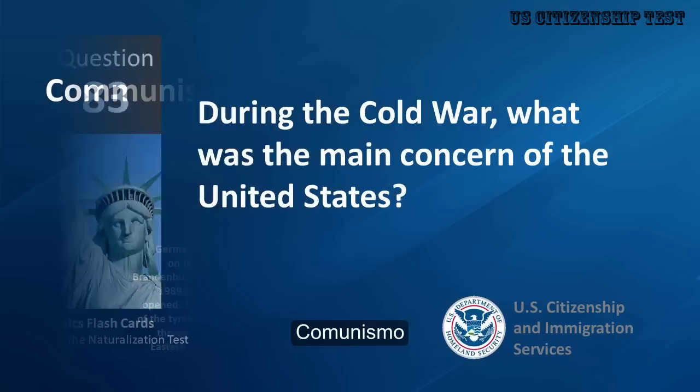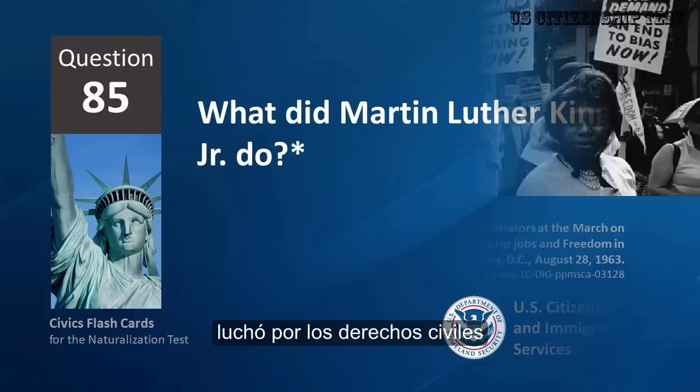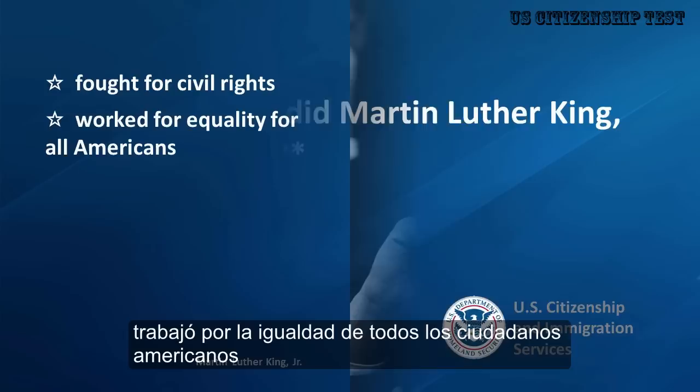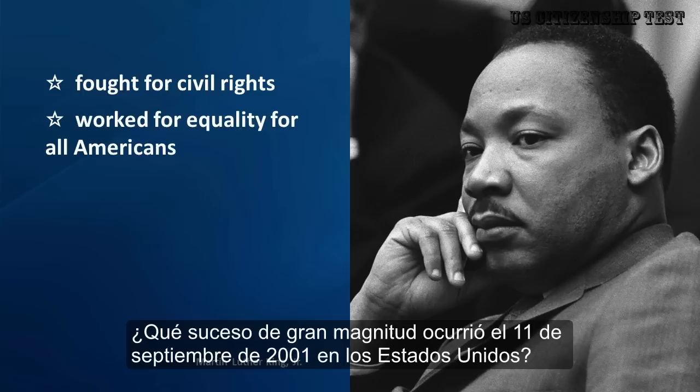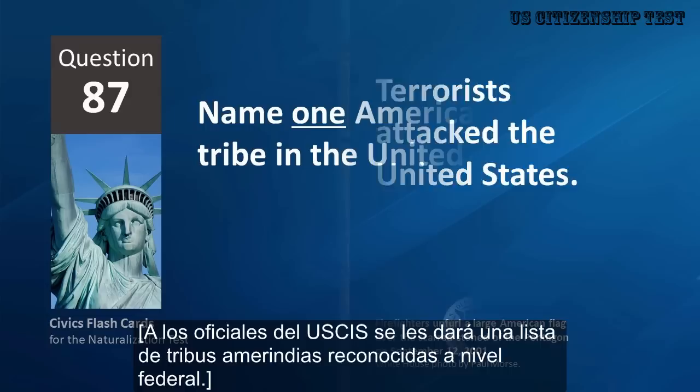During the Cold War, what was the main concern of the United States? Communism. What movement tried to end racial discrimination? Civil Rights Movement. What did Martin Luther King Jr. do? Fought for civil rights, worked for equality for all Americans. What major event happened on September 11, 2001 in the United States? Terrorists attacked the United States.